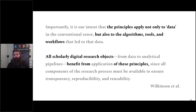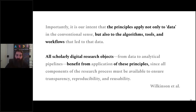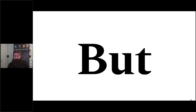In the four years since the authors came up with the guiding principles, it's become apparent that some research objects need a little bit more thinking. For example, software and data are both digital objects, but the way that computers use them and interact with them, and even the way humans interact with them, is different. Therefore the principles possibly need a little bit of revision. Largely, though, we'll be talking about FAIR data over this course.